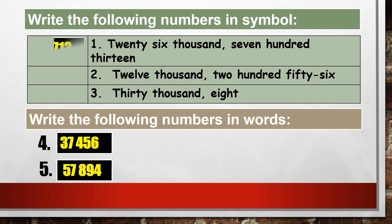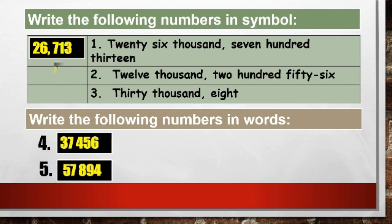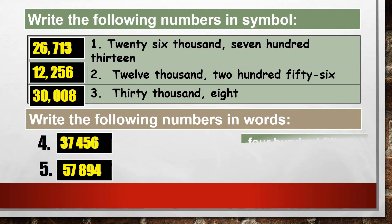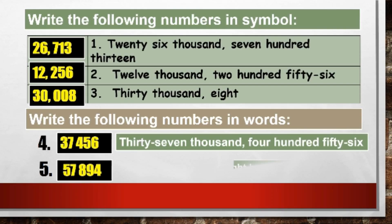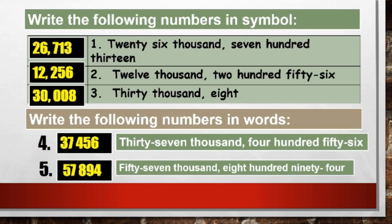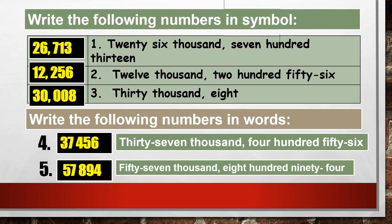Let's check your work. Number 1: 37,756 is written as thirty-seven thousand, seven hundred fifty-six in words. Number 5: 57,894 is written as fifty-seven thousand, eight hundred ninety-four. Did you get the perfect score?